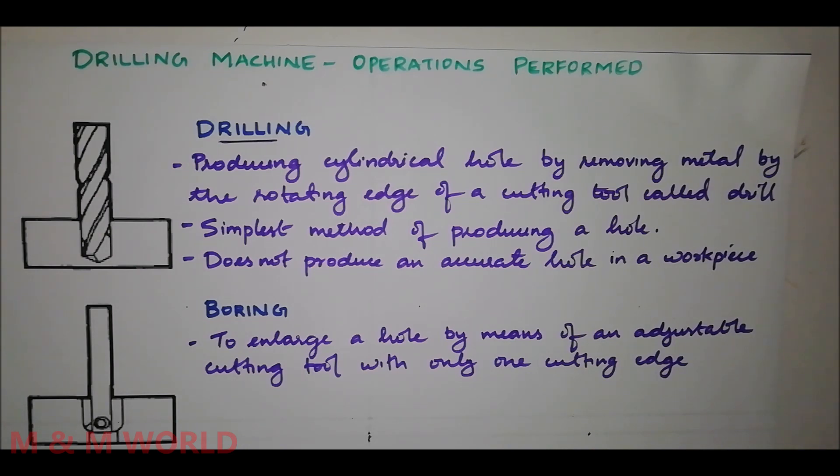Drilling does not produce an accurate hole in a workpiece. The hole generated becomes rough and will always be slightly oversized than the drill used due to the vibration of the spindle and the drill. It is one of the simplest methods of producing a hole.